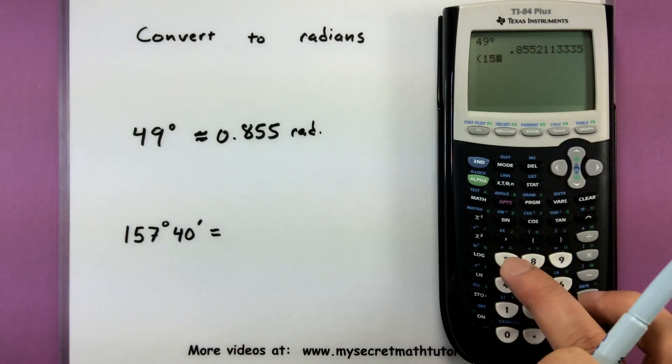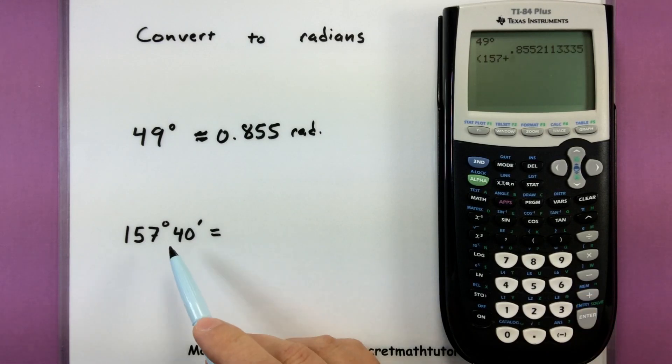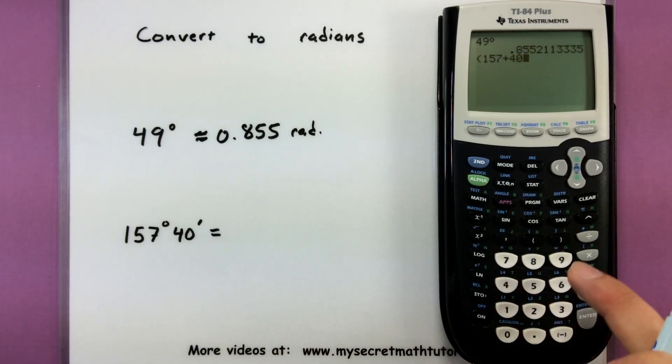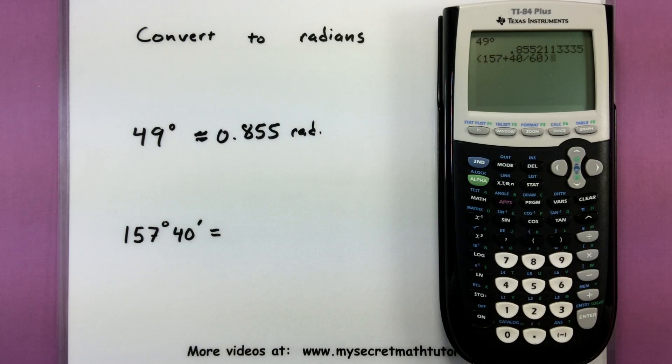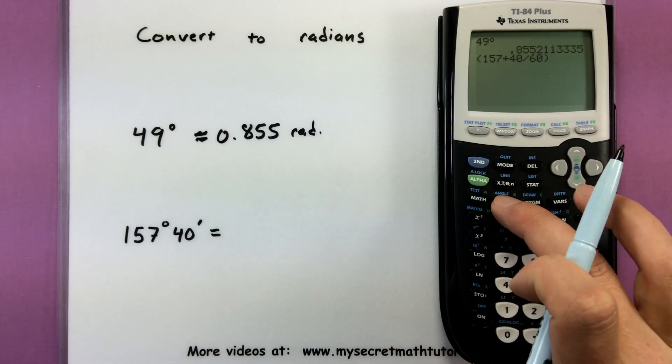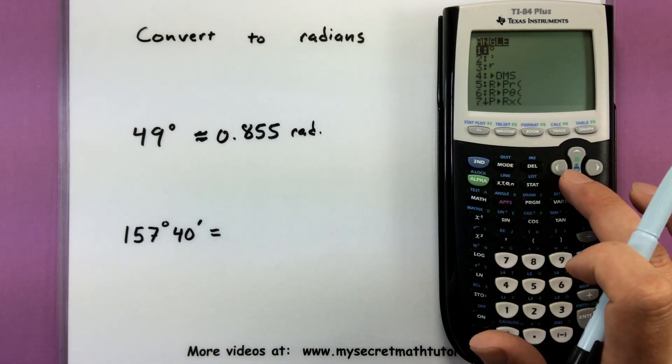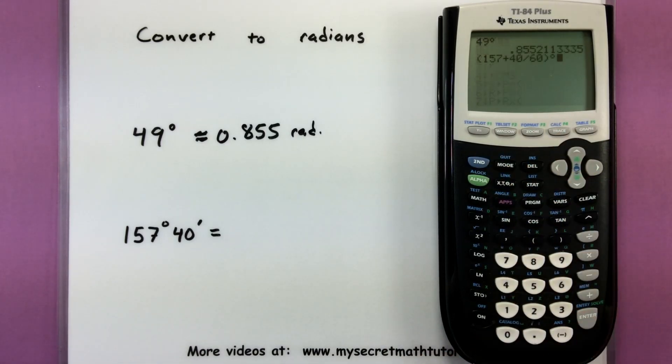I'm going to open up a set of parentheses. So there's our parentheses. Do 157 plus 40 divided by 60. So it's like I'm taking that 40 minutes and saying, well, there's a total of 60 minutes in a degree and really writing this all as degrees. Alright. Now let's go to second angle and tell it that this is all a degree measure and press enter.